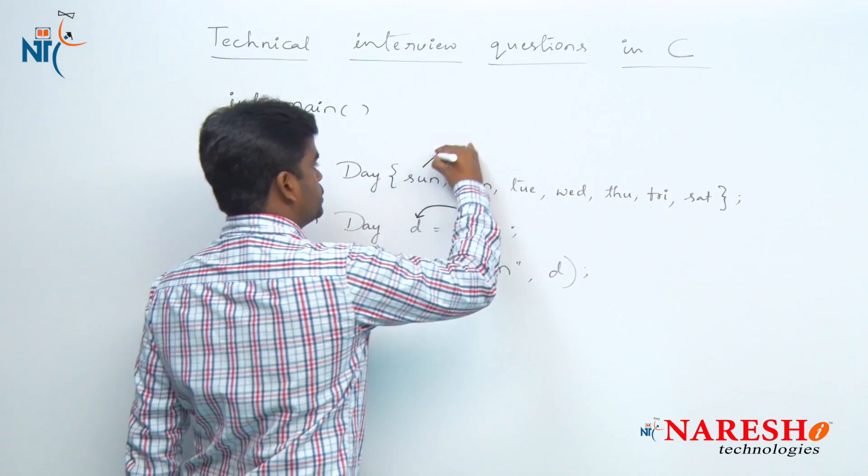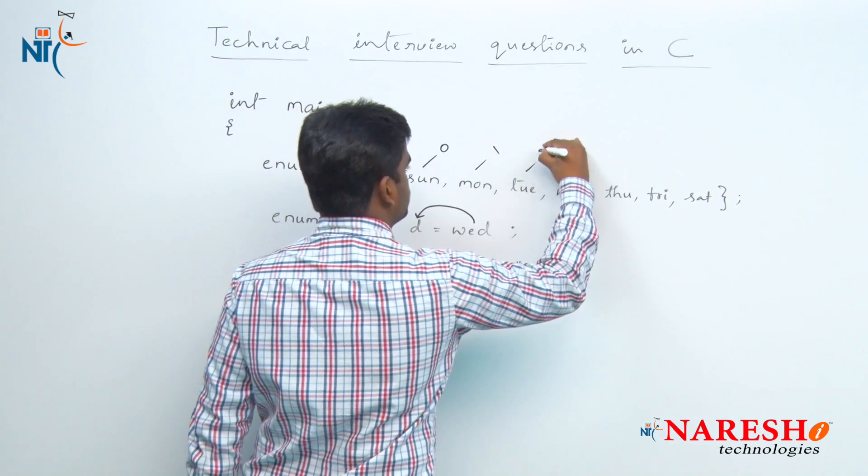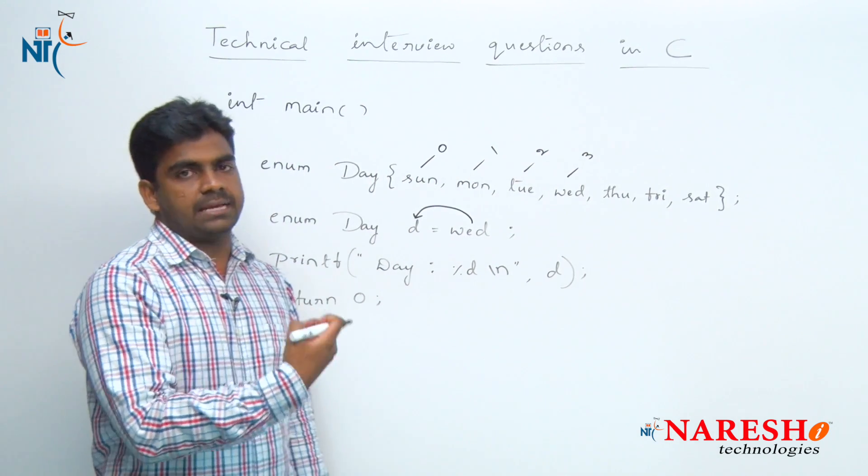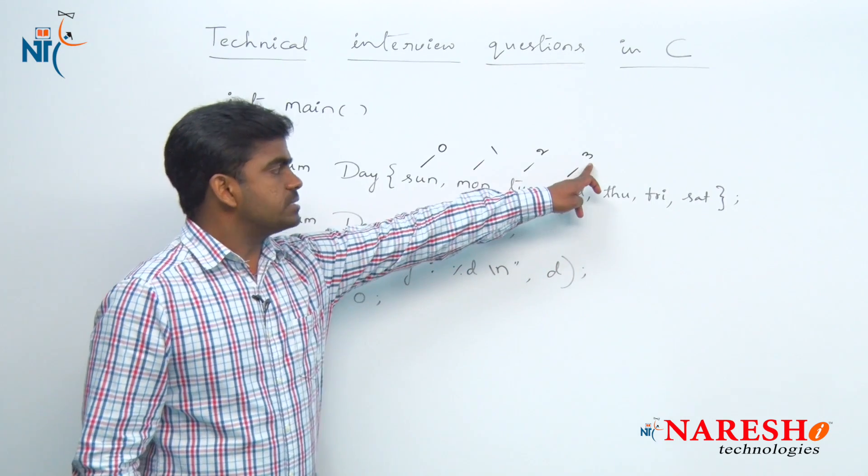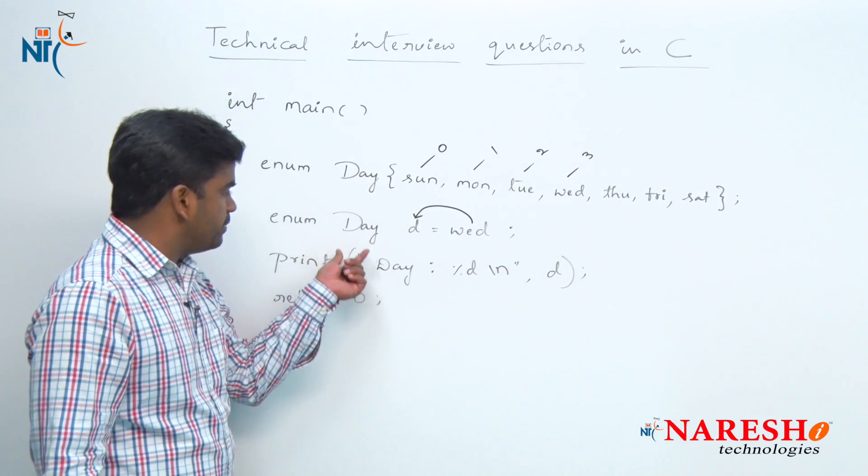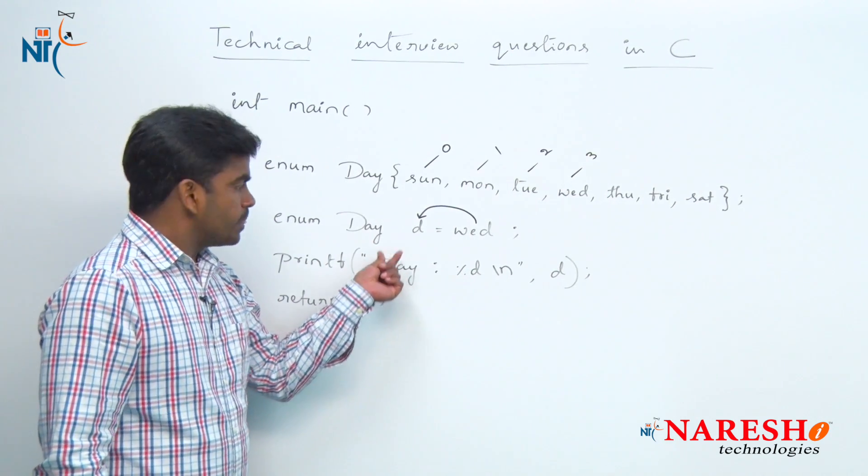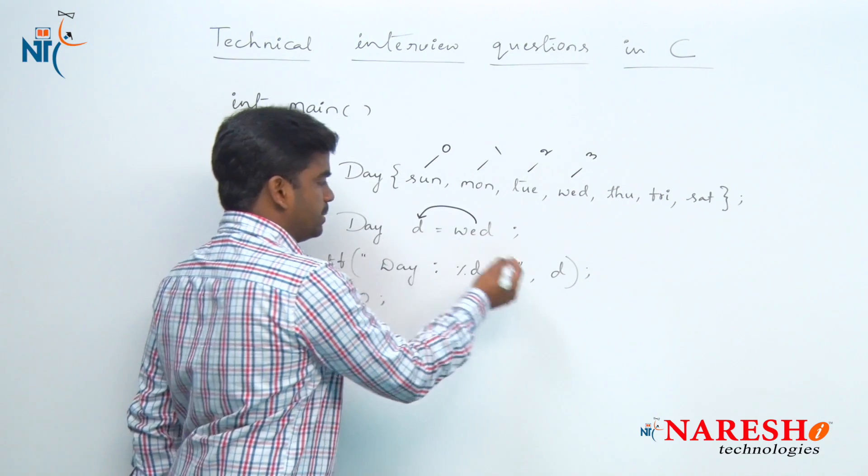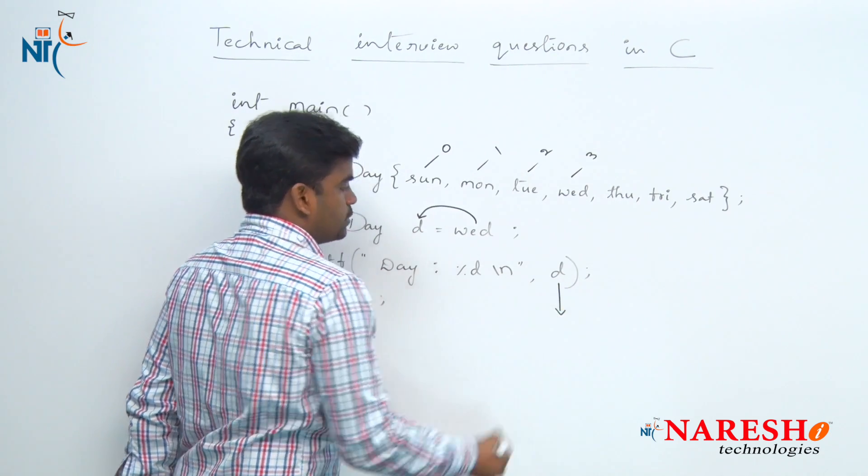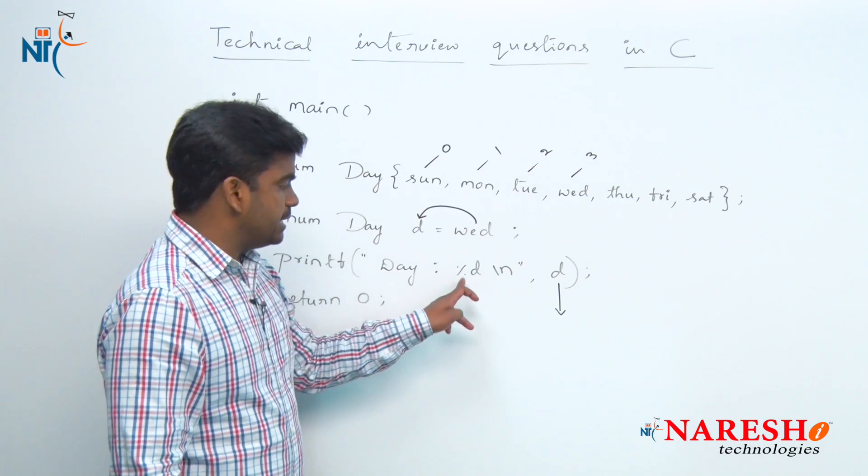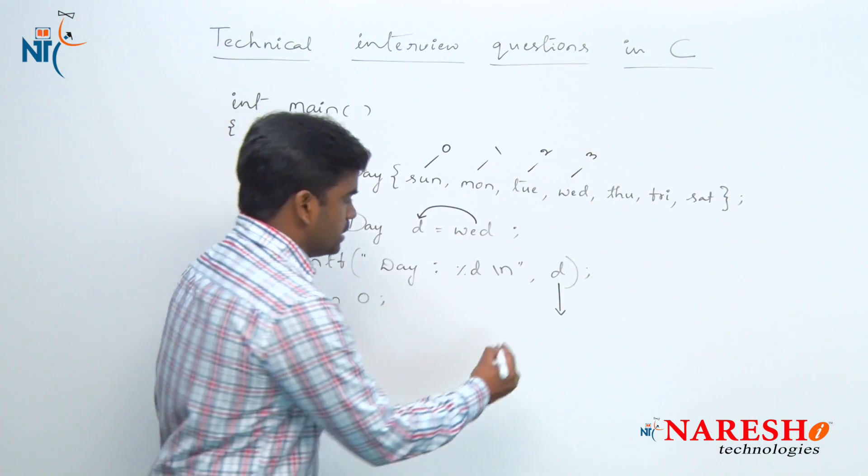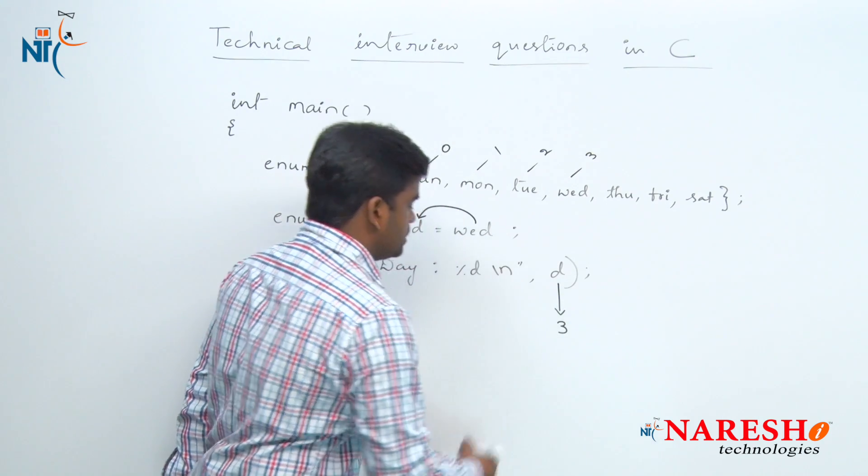So what is the value? It is 0, it is 1, it is 2, and it is 3. All these elements' functionality we are accessing with the help of constant integer values. Whenever we are printing the day, the corresponding integer we are printing. What value will be stored? The integer value, the Wednesday corresponding integer value is 3. So here it prints the value is 3.